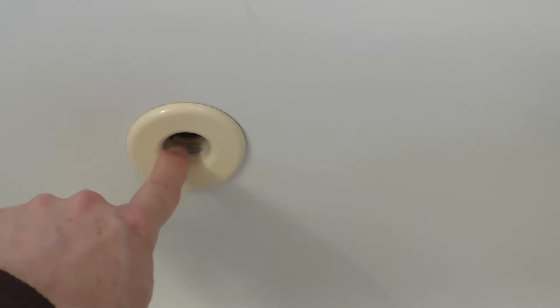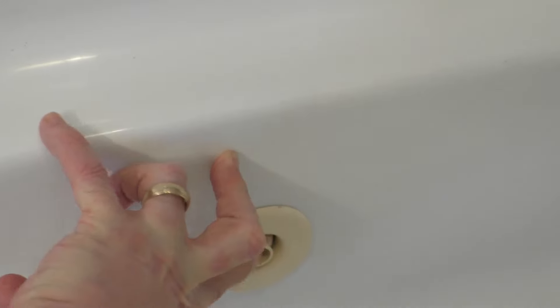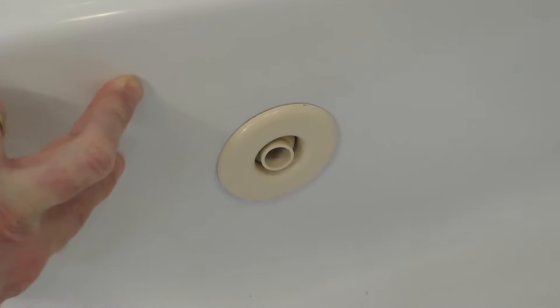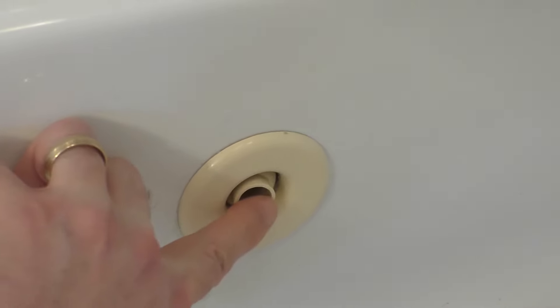This is one of the jets right here and it's one of six but you can see it might be missing something. If you look at the other jet here you can see it's missing the little eyeball which helps to direct the water in different directions.